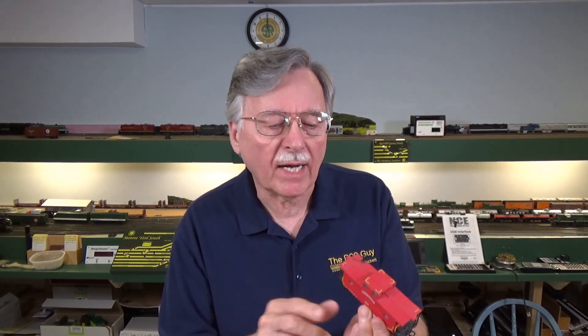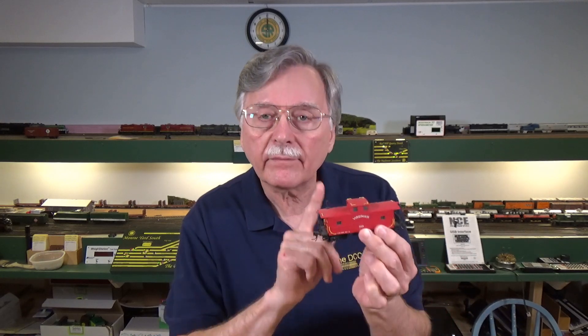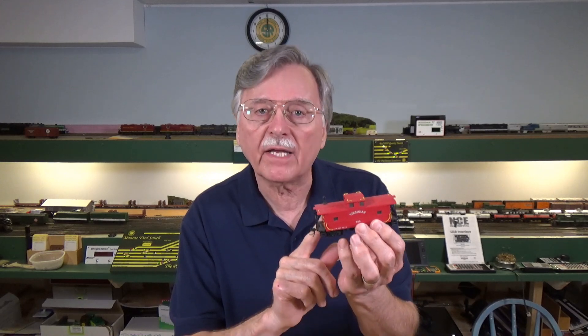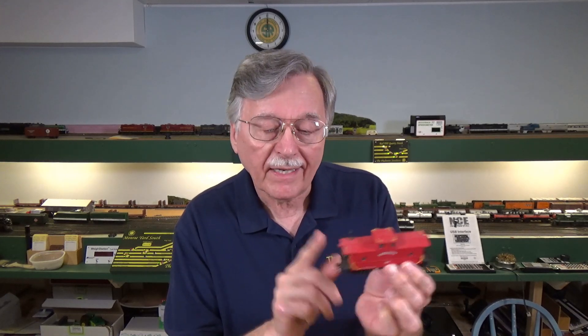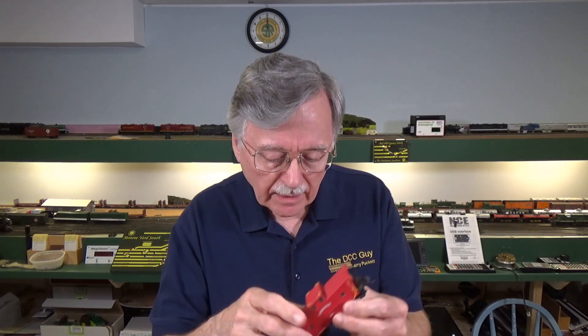Even though you've got full power on DCC tracks all the time, when the cars are rolling along, they're still going to find interruptions in power as a result of dirt or any uneven track, and that will cause the lights inside to flicker. So how can we go about fixing that problem?